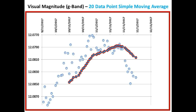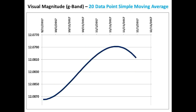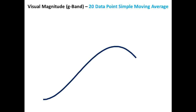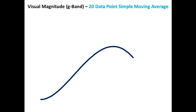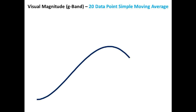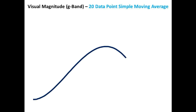The best fit curve for the 20 data point simple moving average is shown here in dark blue. Let's bold in that curve and take away the measurements and the calculated 20 data point simple moving average markers, and center the peak of the curve on the page.